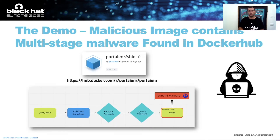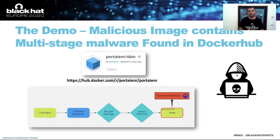In today's demo, we're going to analyze a real multi-stage malware that was found inside a Docker Hub public repository. We will go over the different stages of the malware, starting from unpacking the binary into memory using fileless execution techniques, decrypting a secondary payload to disk, and finally unpacking and executing the Tsunami malware from memory. Let's see how Tracy can help us get through all those evasion techniques and get the actual malicious payload with zero reversing.